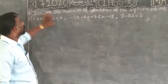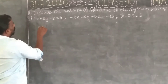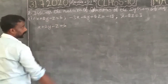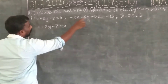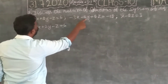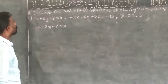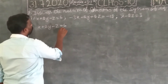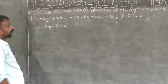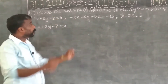What have you seen in the question? First, three equations. The first equation: x plus 2y minus z equal to 6. Second equation: minus 3x minus 2y plus 5z.